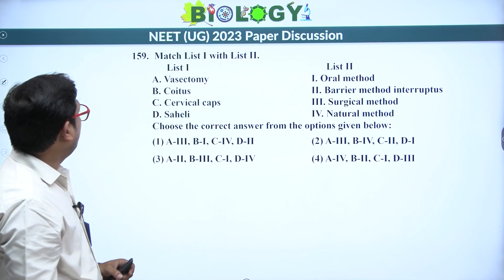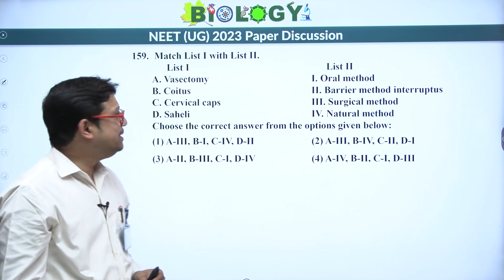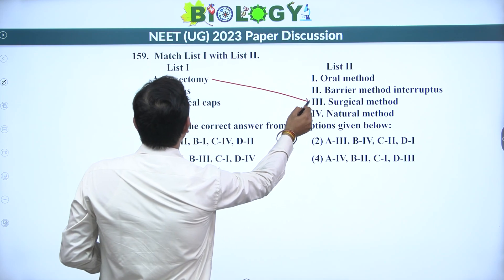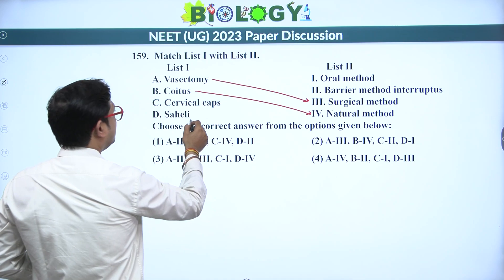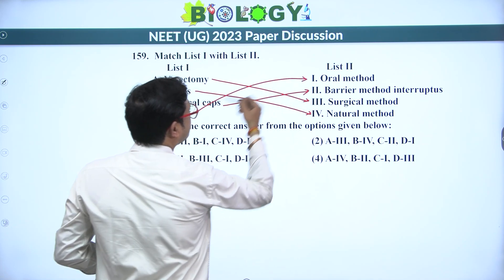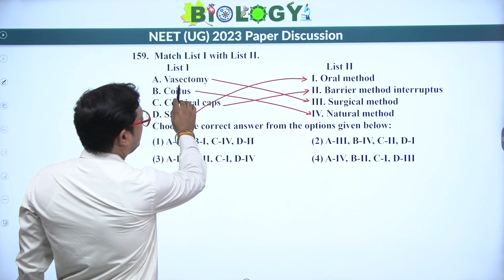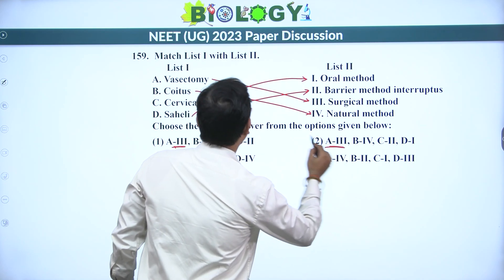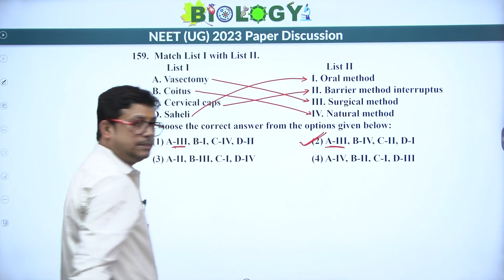Next: match the list — vasectomy is a surgical method of sterilization. Coitus interruptus is a natural method of contraception. Cervical caps are a barrier method. Saheli is an oral contraceptive. So A (vasectomy) matches surgical method — A is 3; coitus interruptus B is 4. Answer is the second option.